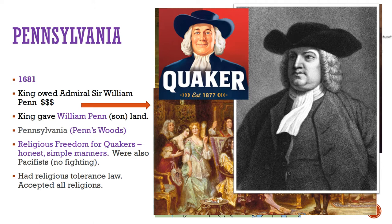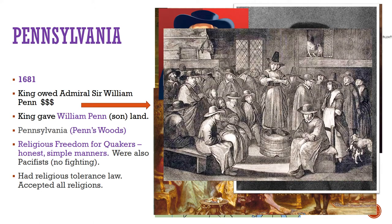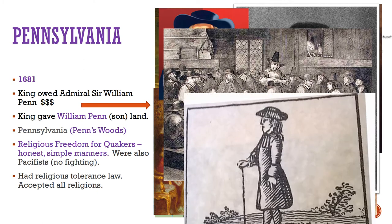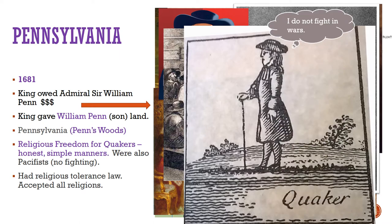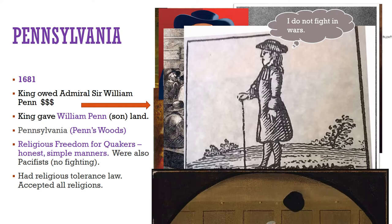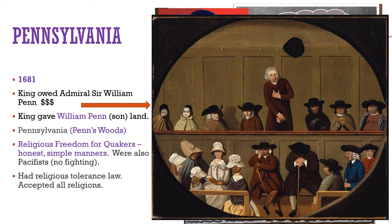Pennsylvania was settled for the purpose of religious freedom for Quakers. Quakers are known for their honesty, their manners, and simple way of living. They are also known as pacifists, which means that they do not fight in wars. Going to war was against the Quaker religion, so they remained neutral.